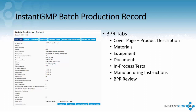The BPR reviewer tab instantly reviews the entirety of the BPR to assure all steps have been completed and all required entries have been made. One other small difference is the manufacturing instructions tab — in the NPR you are creating the instructions for operators, whereas in the BPR your operators can fill in the steps based on what you have required for that step.